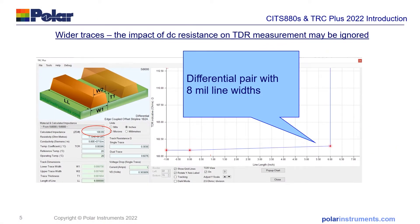Quite recently, with wider traces and thicker copper, the impact of DC resistance has been small enough that you could ignore this effect on the TDR trace. A model here shows a differential pair with 8 mm line widths, where the rise in impedance is only a fraction of an ohm over the whole coupon length — small enough that it won't interfere with the correlation between measured and modeled impedance.